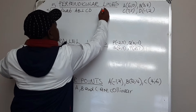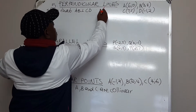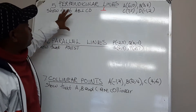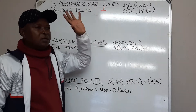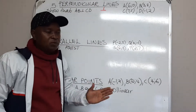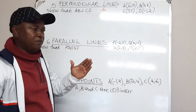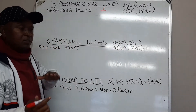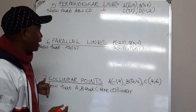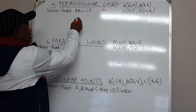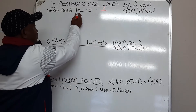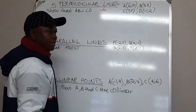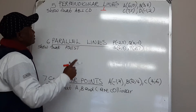We use this symbol to show that they form 90 degrees. The lines are perpendicular if and only if the product of their gradients is negative 1. So, the gradient of one line multiplied by the gradient of another line must give us negative 1.